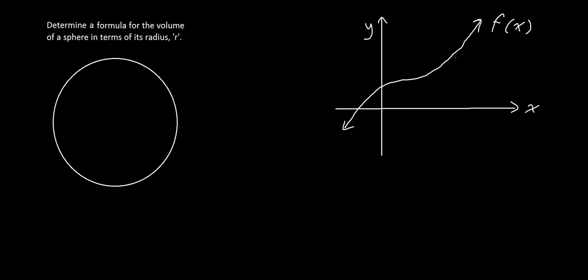Let's say you wanted to find the area under the curve from the y-axis up until some point a. To find the area, one visual way to think about it is: if you know the height at a given x, you can take that height, multiply it by a small change in x, and that gives you the approximate area for that slice. Do that again and again, and if you add them all up, you get the area from the y-axis up to a.